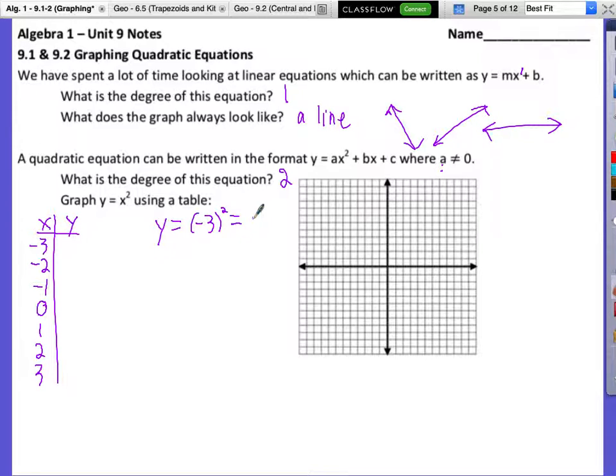So we plug it into this. We take y is equal to x squared. In place of this x, we plug in negative three. And remember, how do we always plug things in? Put them in parentheses. And then we square it. So now, what would negative three squared be? Like negative three times negative three. Positive nine.